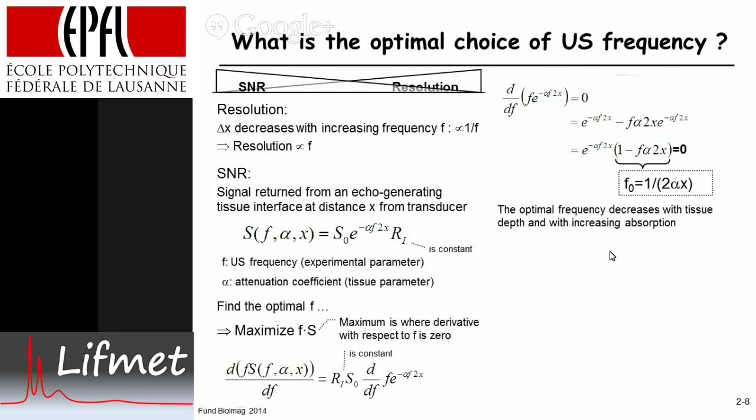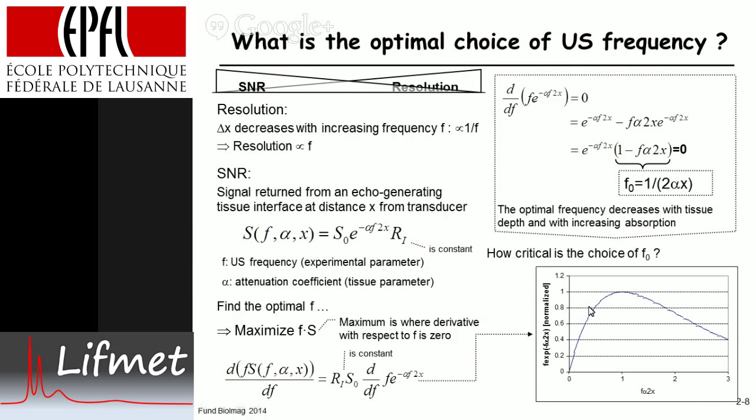The optimal frequency decreases with tissue depth and increases with increasing absorption. So let's look at this function and let's see how critical this choice of f₀ is. I'm going to pretend here the experiment has chosen a certain f₀.